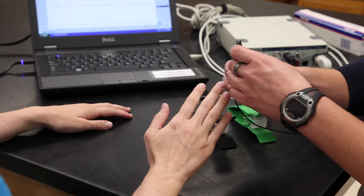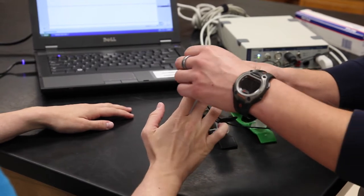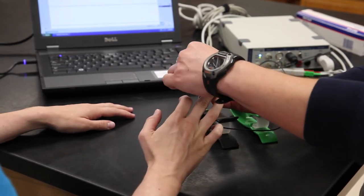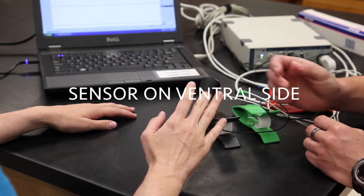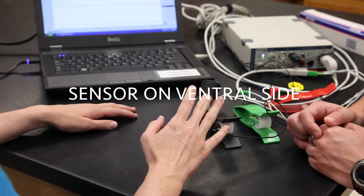Connect the pulse transducer to the tip of the middle finger on either the right or left hand. Wrap the velcro tight enough so the subject feels a pulse, but not tight enough to compromise circulation.